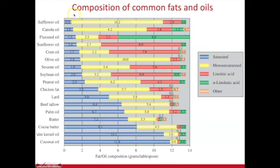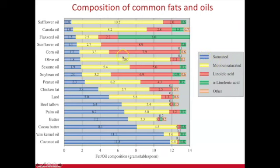Looking at the composition of some everyday fats and oils, the x-axis shows the breakdown of saturated fat in blue, monounsaturated — that's the one double bond — and linoleic and linolenic acid in red and green. Those are the polyunsaturated fatty acids. These unsaturated fats — monounsaturated, linoleic, and linolenic — are considered your healthy fats compared to saturated fatty acids in blue, which are considered unhealthy fats.